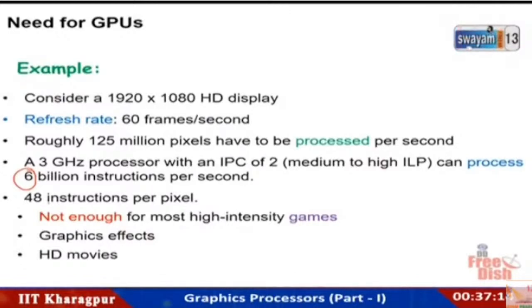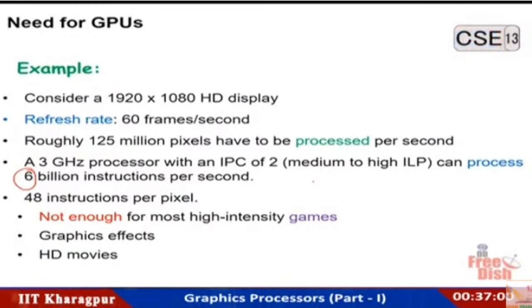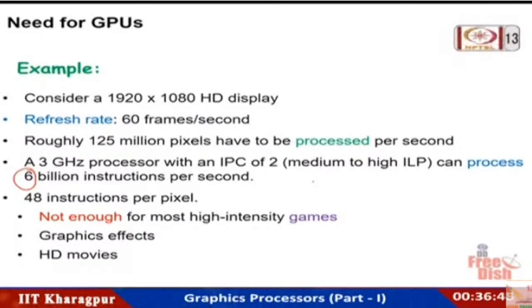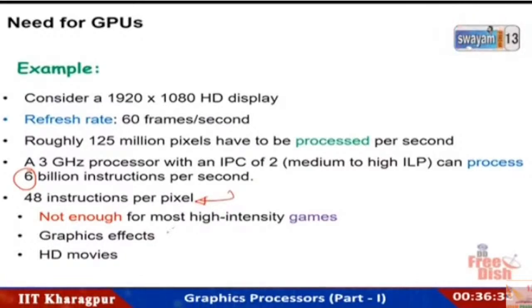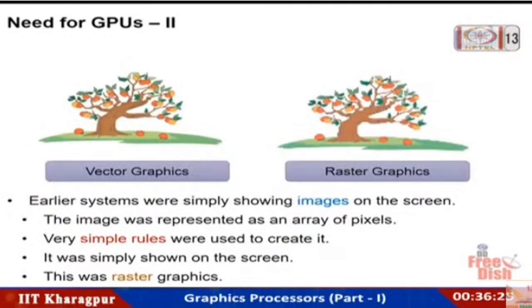48 instructions per pixel sounds like a lot, but it's actually not enough. With high-intensity games, video effects, and multitasking — like writing a document while watching a YouTube video — the processor has to do both. This much is simply not enough for high-definition, high-intensity graphics. This is where the need for GPUs comes up.